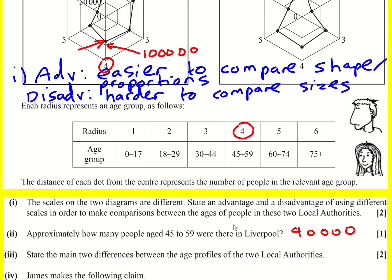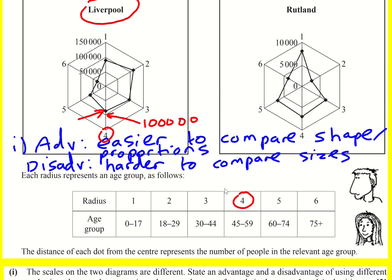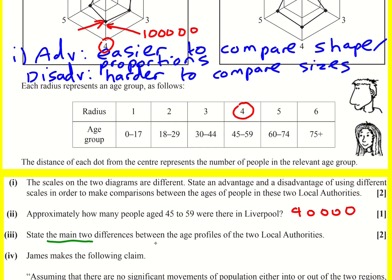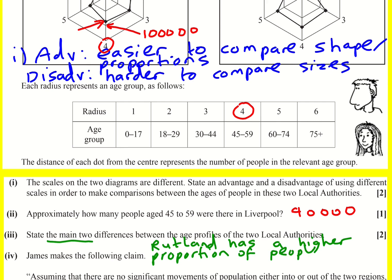Part three asks to state the main two differences between the age profiles of the two local authorities. My first point is about the 0-to-17 age group: you can see the proportion is higher in Rutland than in Liverpool, so that would be a main difference. So: Rutland has a higher proportion of people between 0 and 17 than Liverpool.